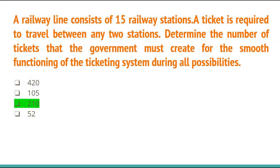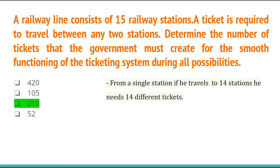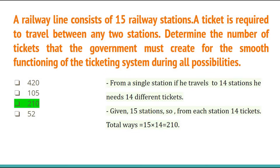A railway line consists of 15 railway stations. A ticket is required to travel between any two stations. Determine the number of tickets the government must create for smooth functioning during all possibilities. From a single station, a person can travel to 14 other stations, needing 14 different tickets. With 15 total stations, total ways = 15 × 14 = 210. Option C, 210, is the correct answer.